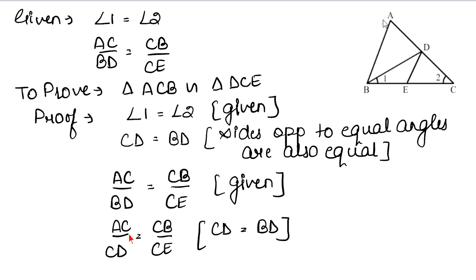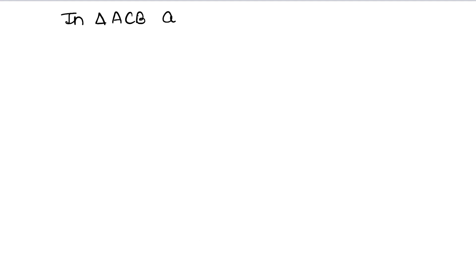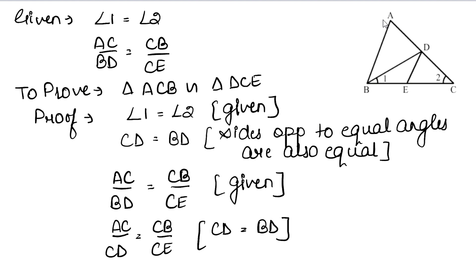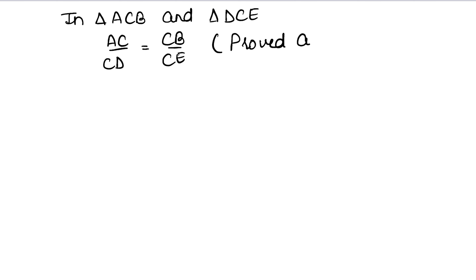दो sides हमने proof कर दिया है equal. और अगर आप देखेंगे, दोनों triangles ACB और DCE में angle C common है. ACB और DCE में corresponding sides AC upon CD equals CB upon CE proved है, और बीच का angle C equal है.